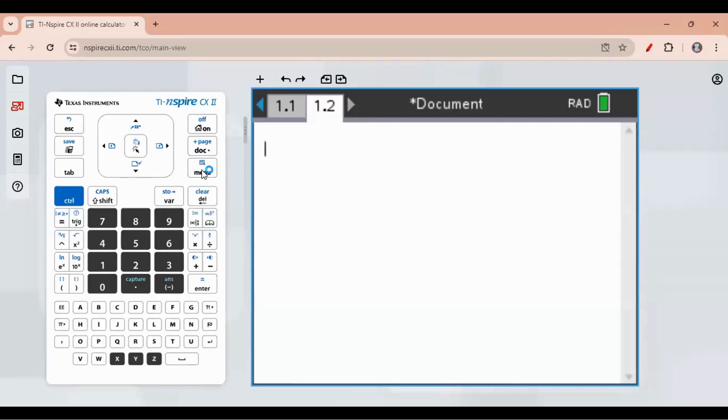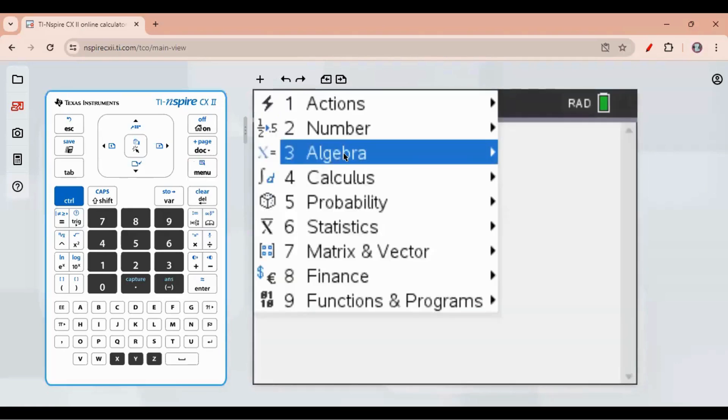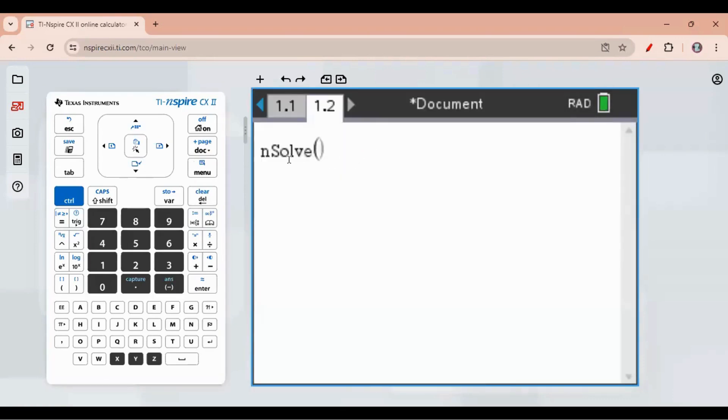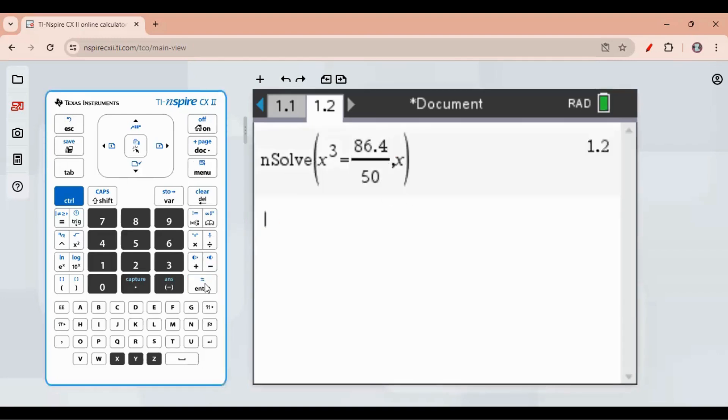So go for n solve, numerical solve. Menu, then algebra and numerical solve. Once you've got the n solve, we got r cube equal to. So here we can use x cube, x power 3 equals. And there is a fraction, 86.4 divided by 50. And then use a comma. Then whatever the variable we are solving, it's based on x. So it's that simple. When you click enter...